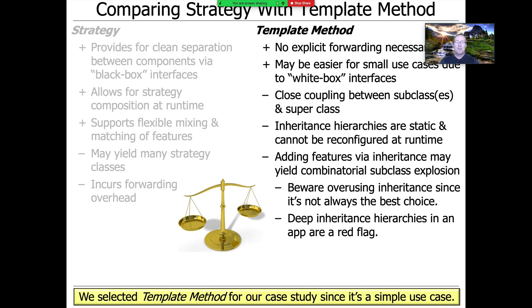In contrast, template method really uses inheritance as opposed to plug-ability by object composition. It works very well for simple use cases like our succinct mode versus verbose mode example. But in more complicated use cases it has downsides: you've got to closely couple the subclasses with the superclass, which can get annoying. The inheritance hierarchies are static and can't be reconfigured at runtime, so plugging and playing is more complicated. And anytime you have a lot of inheritance, you can end up with a combinatorial explosion of subclasses — if you've got an abstract base class with five hook methods each having 16 different variabilities, that's a very large number of subclasses, which is not scalable, whereas strategy doesn't lead you in the same direction.